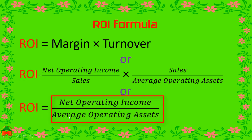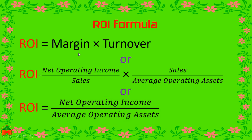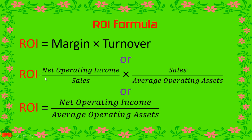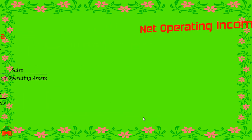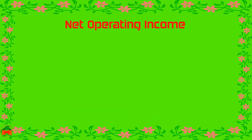All three formulas are equivalent. The first is margin multiplied by turnover. The second broad form is net operating income divided by sales, multiplied by sales divided by average operating assets. Cancelling sales from both terms gives the short formula: net operating income divided by average operating assets.